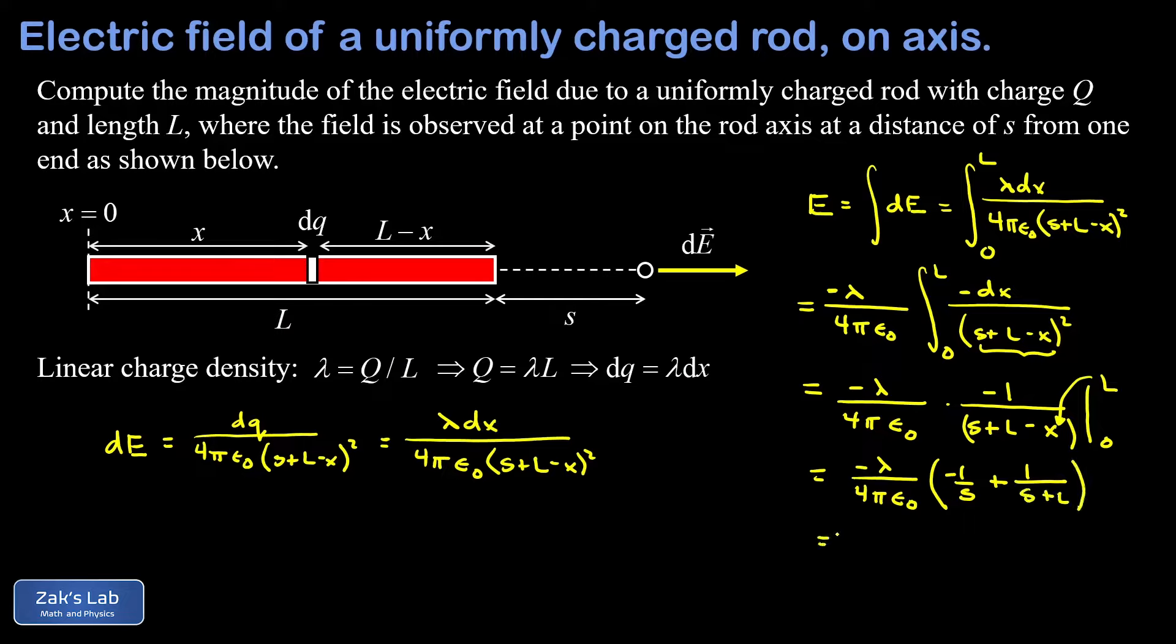Finally I want to distribute the negative one from out in front of the lambda and I get lambda over four pi epsilon zero times the quantity one over s minus one over s plus L. Now this is a decent way to keep the answer but before we quit I want to put it in a little more compact form that makes it easier to investigate a limiting case.